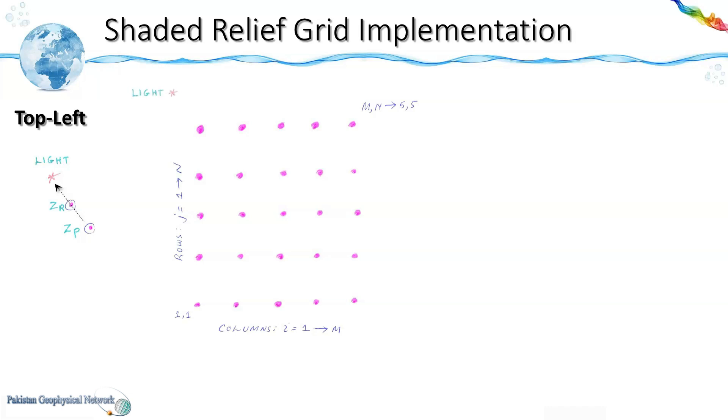And the light source is located here. Now if this is zp then its reference node zr would be this one. Here zp would be represented by i,j and zr would be represented by i minus 1, j plus 1.